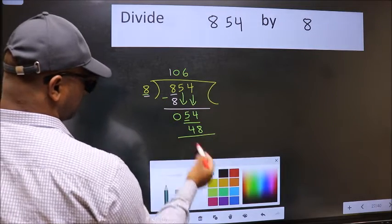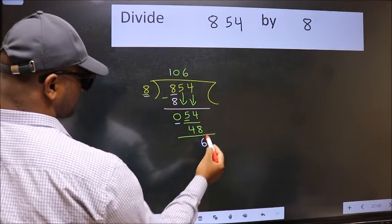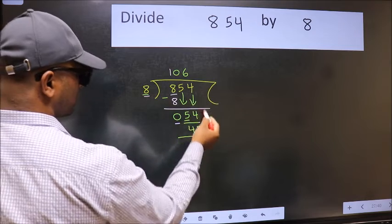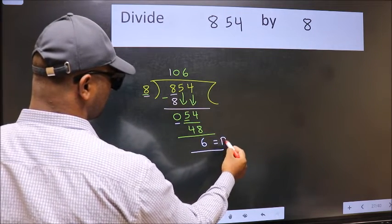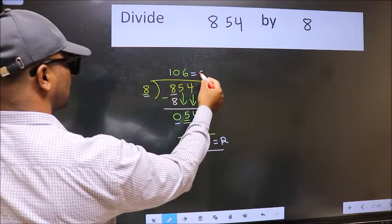Now we should subtract. We get 6. No more numbers to bring it down. So we stop here. This is our remainder and this is our quotient.